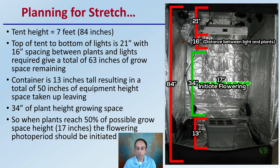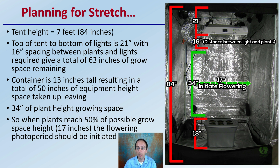Here's a quick example to illustrate planning for stretch. In this case, the tent height is 7 feet, or 84 inches. The top of the tent to the bottom of the lights is 21 inches. With 16-inch spacing required between the plants and lights, that gives a total of 63 inches of grow space remaining. The container is 13 inches tall, resulting in 50 inches of equipment height being accounted for. This limits actual plant height to 34 inches. So when plants reach 50% of that space — in this case 17 inches — the flowering photoperiod should be initiated, at least as a good starting point.